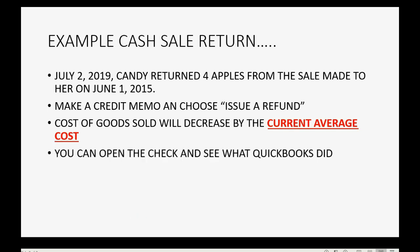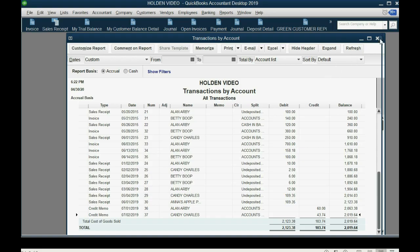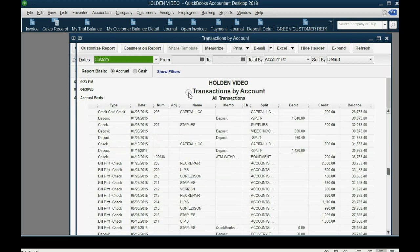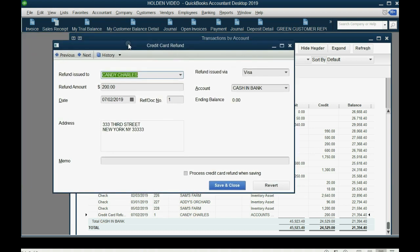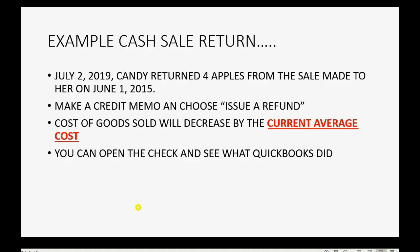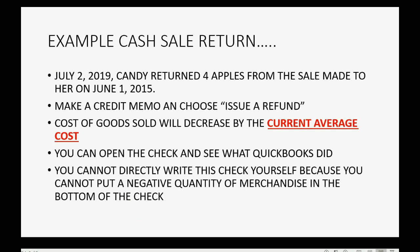You can double-click and open the check to see exactly what QuickBooks did. Go to cash and bank, double-click, and scroll to the very last transaction — it says 'Credit Refund.' Double-clicking it shows it's the same as writing a check. However, you must do it this way because if you try to write a check yourself, you cannot put a negative quantity of merchandise in the bottom of a check. There's a lot to consider when giving a cash refund for a cash sale of merchandise.